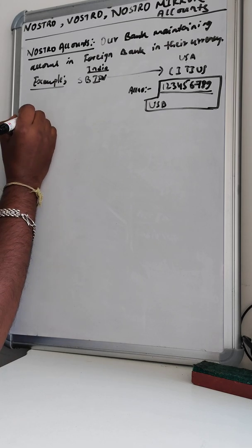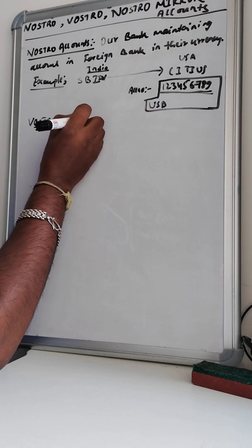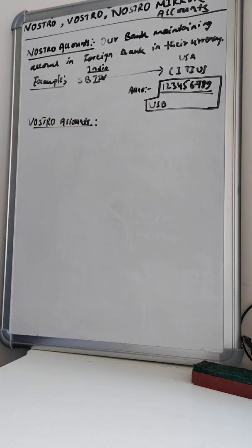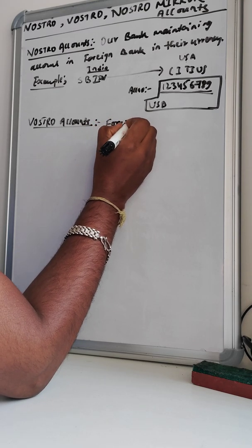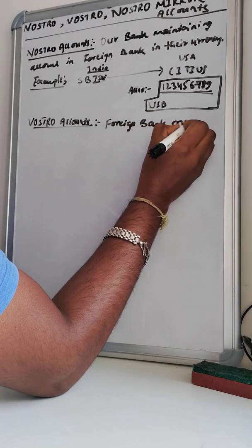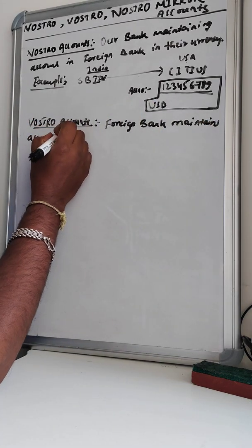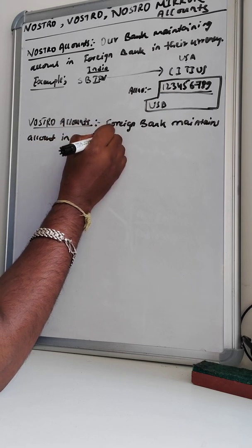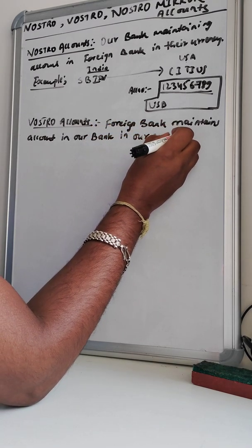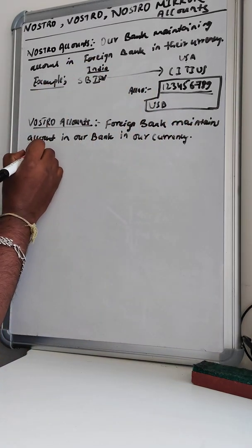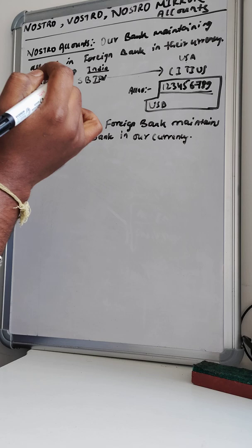Now let's understand the Vostro account. The basic definition of a Vostro account is when a foreign bank maintains an account in our bank in our currency. The definition means when the foreign bank maintains an account in our bank in our currency.